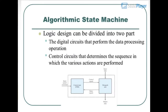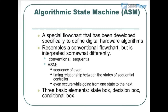Algorithmic State Machine (ASM): Logic design can be divided into two parts — the digital circuits that perform data processing operations, and control circuits that determine the sequence in which the various actions are performed. An ASM is a special flowchart developed specifically to define digital hardware algorithms. It resembles a conventional flowchart but is interpreted differently. Conventional flowcharts represent sequential steps, while ASM captures timing relationships between states of a sequential controller, with events occurring while going from one state to the next.